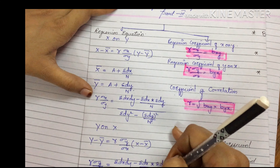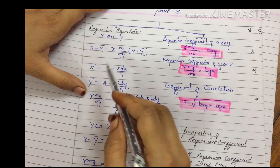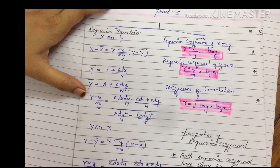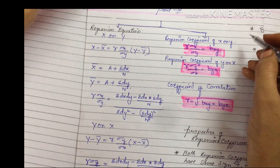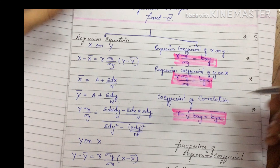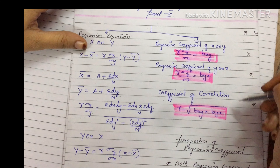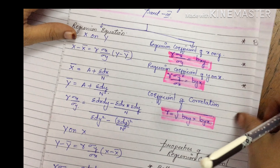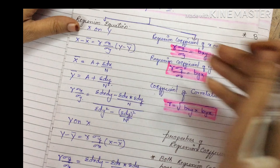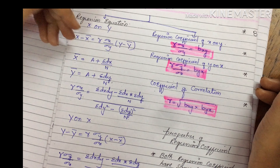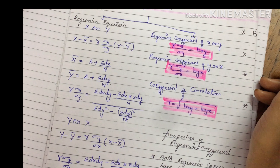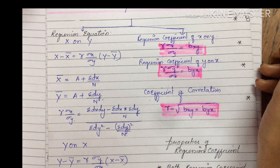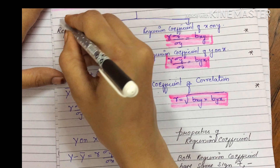We have already seen this part in my previous videos — how to solve regression equations. Today we are going to see how to solve for the coefficient of correlation. Now, how to differentiate and decide which formula to use when solving a problem: if you have tabulation form with x and y values given directly, use that approach.